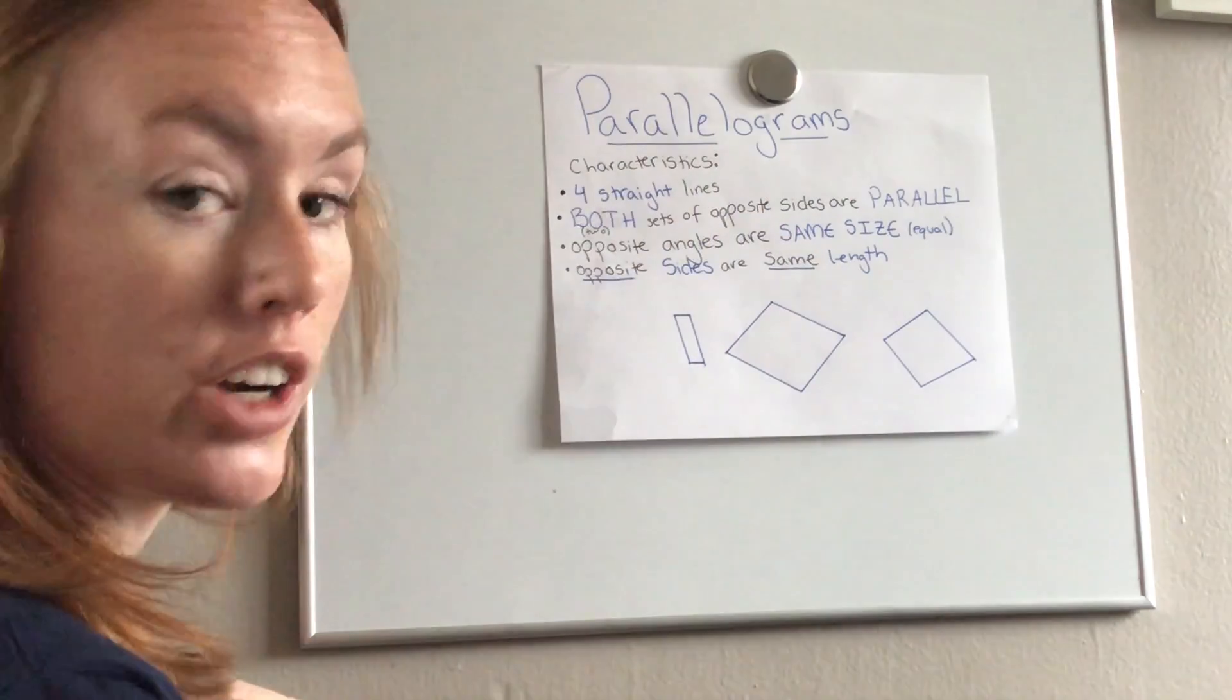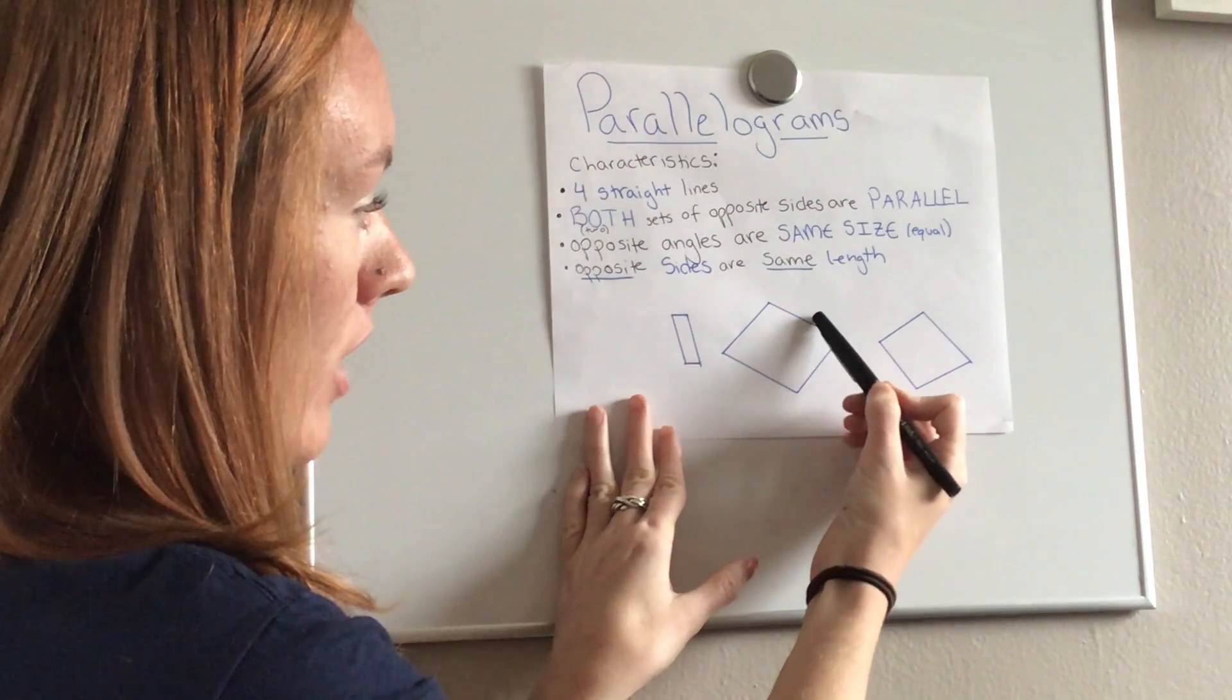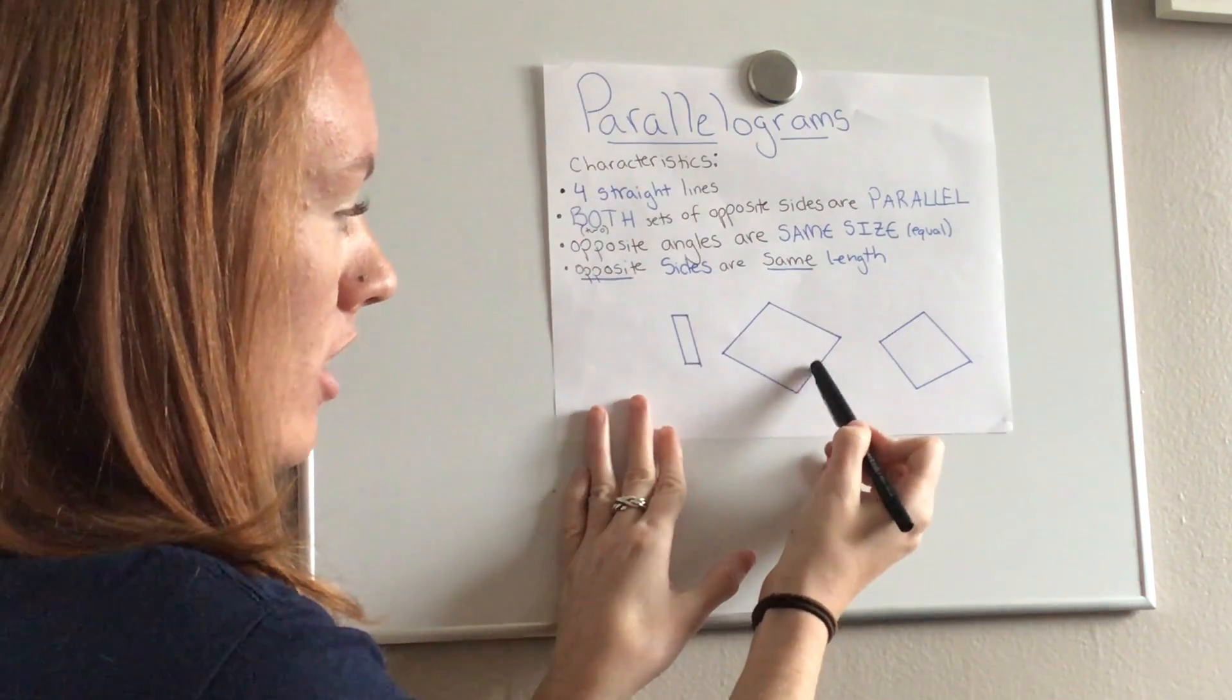So to be a parallelogram your opposite sides have to be the same length. That means this side right here has to match in length to this side. This side right here has to match length to this side.